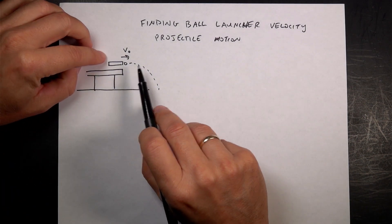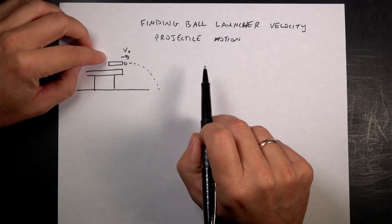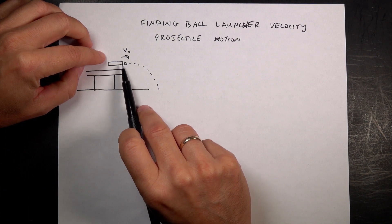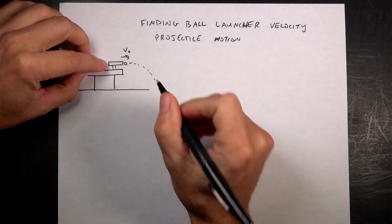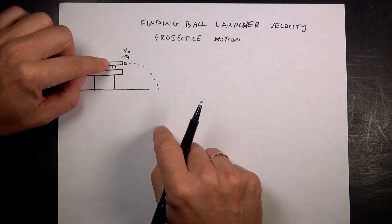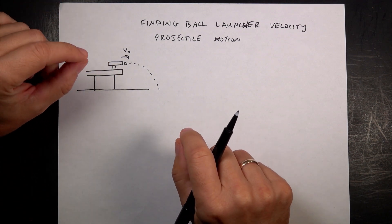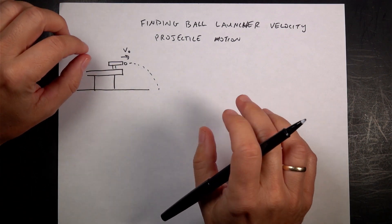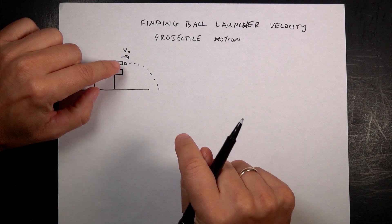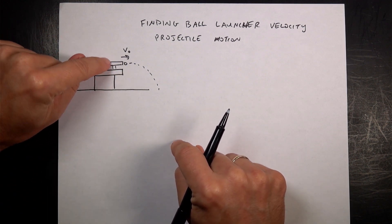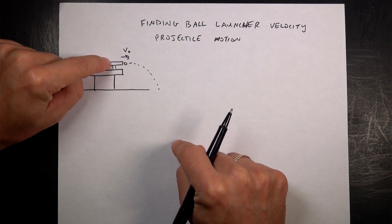Let's suppose that we want to find the launch velocity of a ball launcher. We use these things in lab — little devices that shoot out a ball. You can measure the angle and put it on different settings, but you want to know how fast that ball is coming out. I'm going to show you a bunch of different ways to find this.